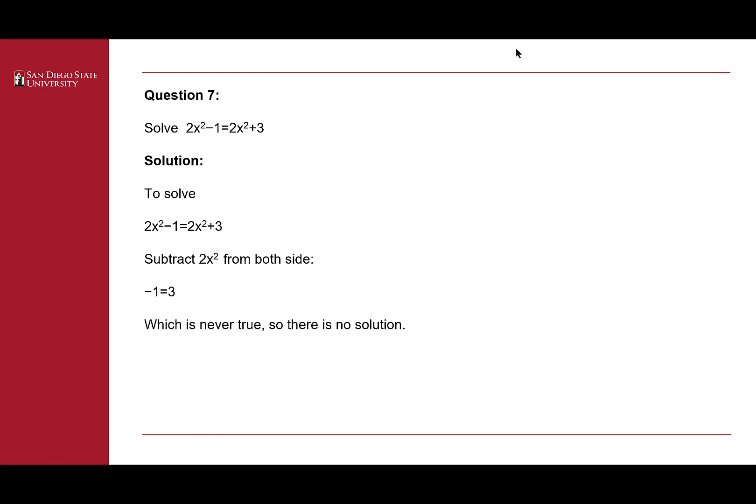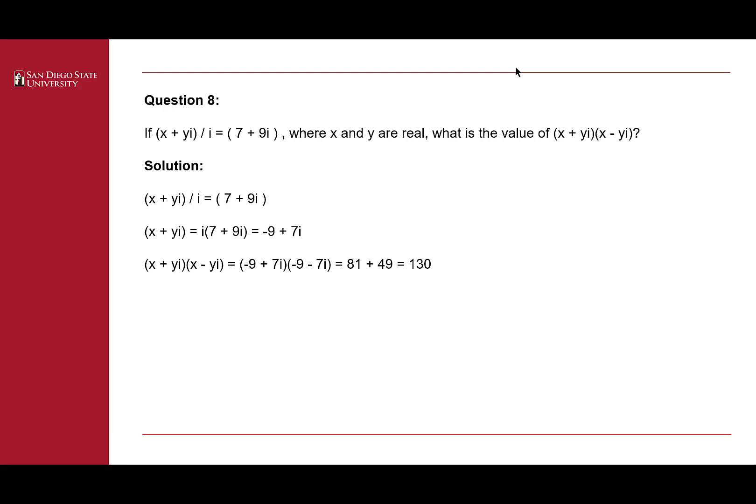The next question asks us to solve 2x² - 1 = 2x² + 3. This is a trick question. We subtract 2x² from both sides and get -1 = 3, which cannot be true in any case. So there is no solution for this equation.